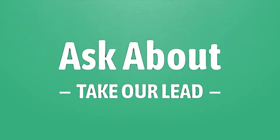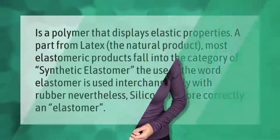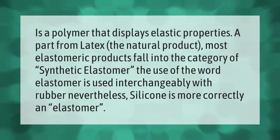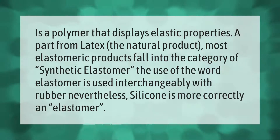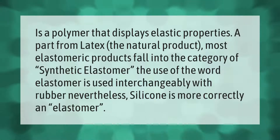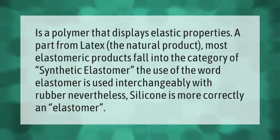An elastomer is a polymer that displays elastic properties. Apart from latex, the natural product, most elastomeric products fall into the category of synthetic elastomer. The word elastomer is used interchangeably with rubber; nevertheless, silicone is more correctly classified as an elastomer.